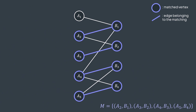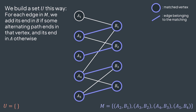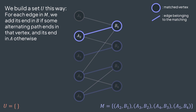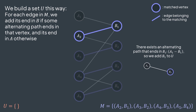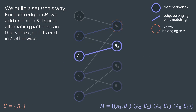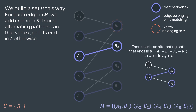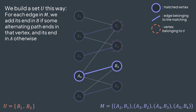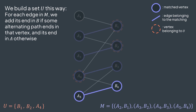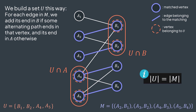From our example with the maximum matching M, we build a set of vertices U this way. For each edge of the matching, we add to U its end in B if some alternating path ends in that vertex, otherwise we add its end in A. For the first edge a2 b1, there exists an alternating path that ends in b1, the path a1 b1, so we add b1. For the second edge a3 b2, there exists an alternating path that ends in b2, the path a1 b1 a2 b2, so we add b2. For the third edge a4 b3, there is no alternating path that ends in b3, so we take a4 instead. And for the last edge a5 b4, no alternating path ends in b4, so we take a5. We constructed our set U, it has the same size as M, because we took exactly one vertex for each edge of M.